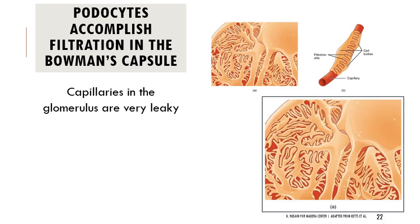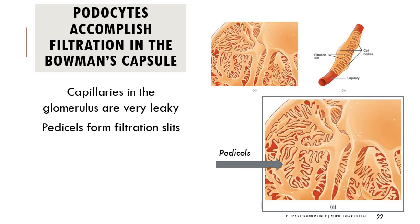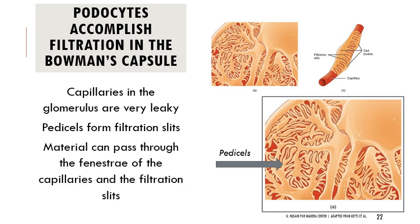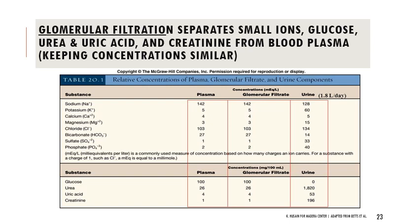Filtration happens at structures called podocytes. The capillaries in the glomerulus are extremely leaky with lots of fenestrations — openings like windows. These capillaries are surrounded by podocytes, which have little structures called pedicels that form filters wrapping around the capillary. The pedicels create filtration slits. Any material that passes through the fenestrations and through the filtration slits gets into Bowman's capsule and into the nephron. Glomerular filtration separates out small ions, glucose, urea, uric acid, and creatinine from blood plasma.